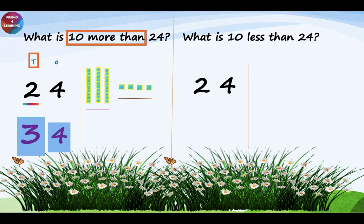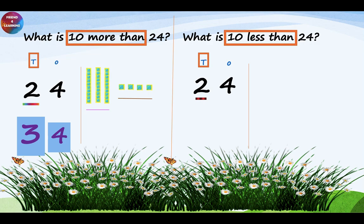Now let's try subtracting 10 from the same number. What is 10 less than 24? First, you have to write the place values — that is, 1's and 10's. Now you are going to read the sum carefully. It says 10 less than, which means you are going to subtract, and what you subtract is the 10's place. What is under the 10's place? Number 2. So when you subtract from the 10's place, 2 becomes 1. And we should not make any changes to the 1's place, so it will remain the same — that is 4.